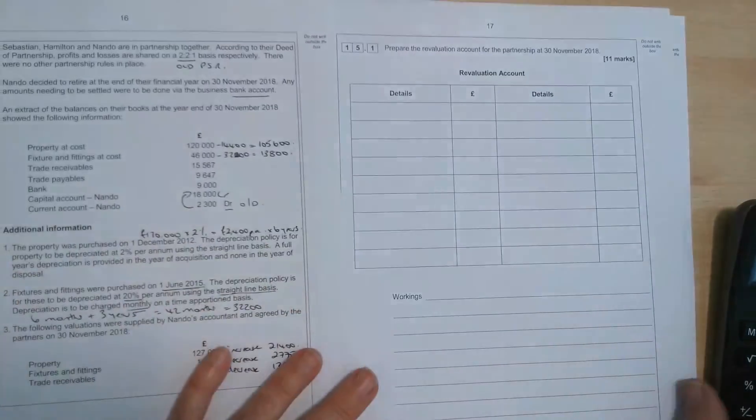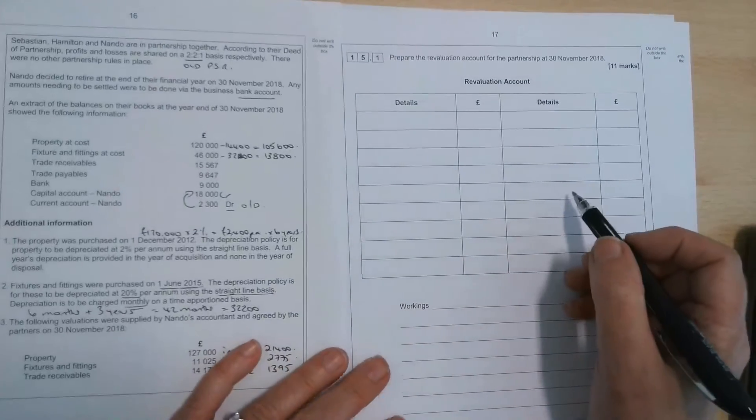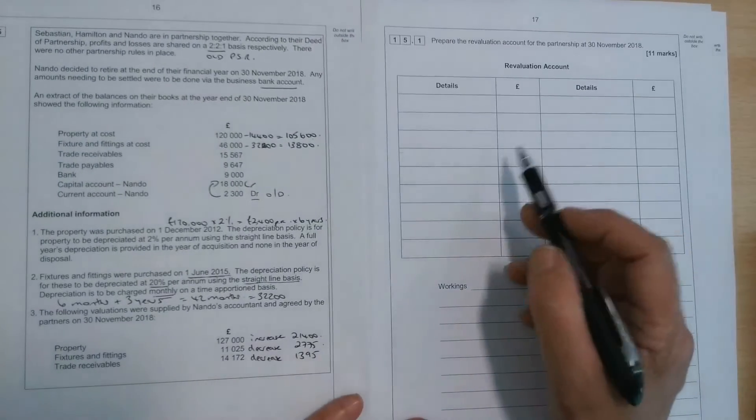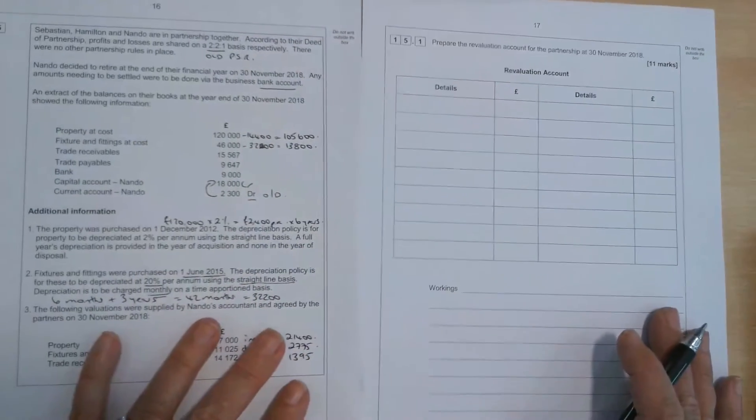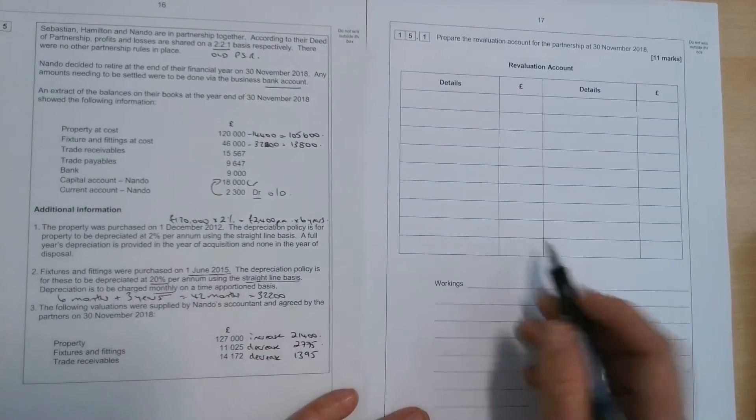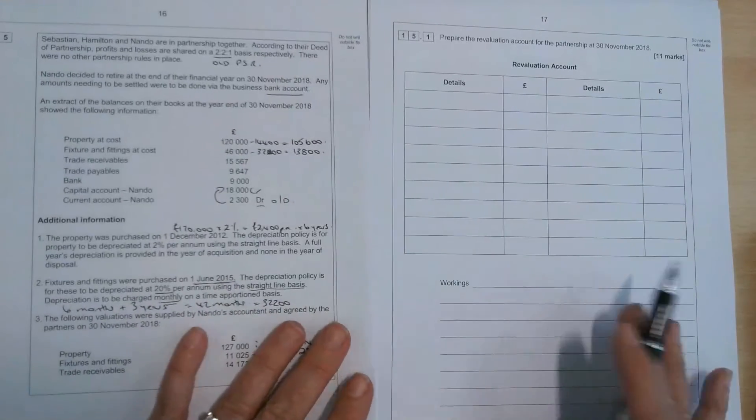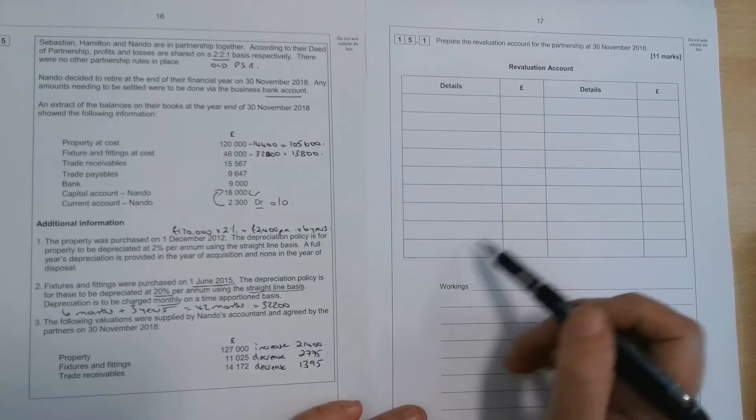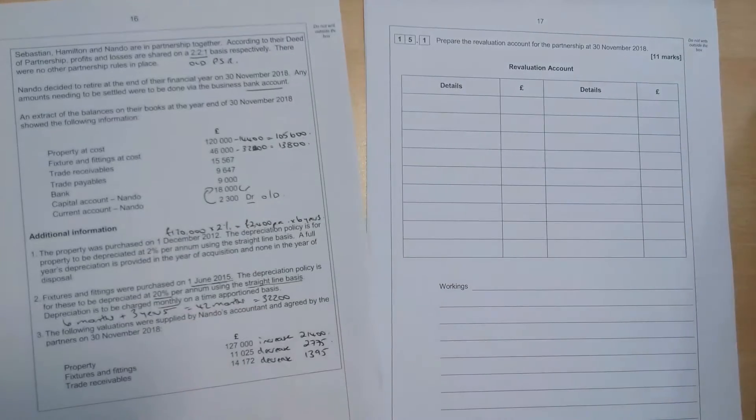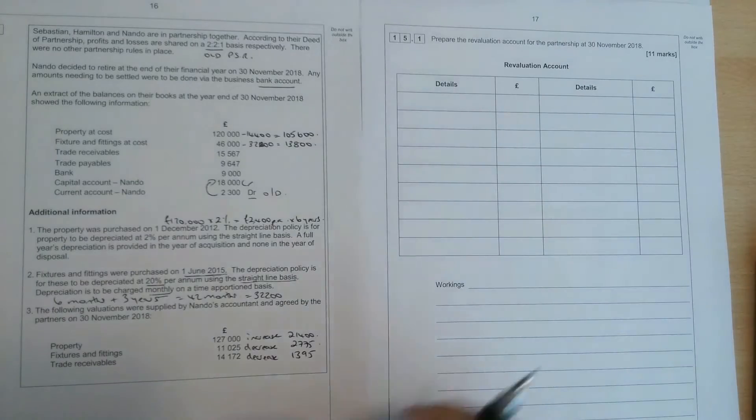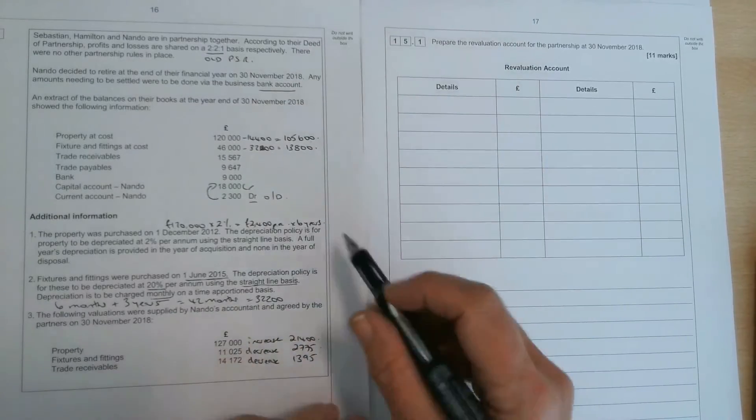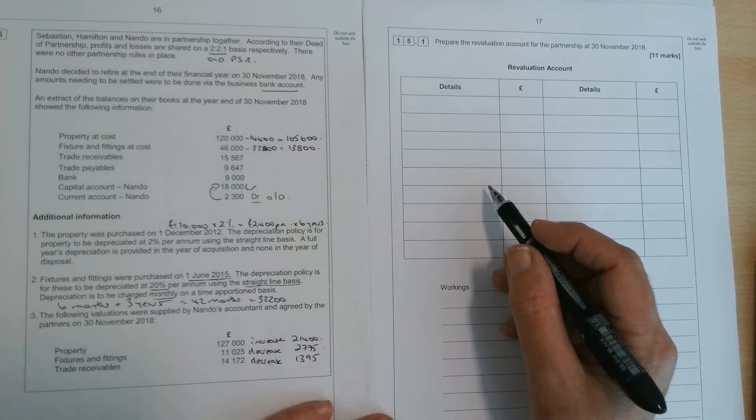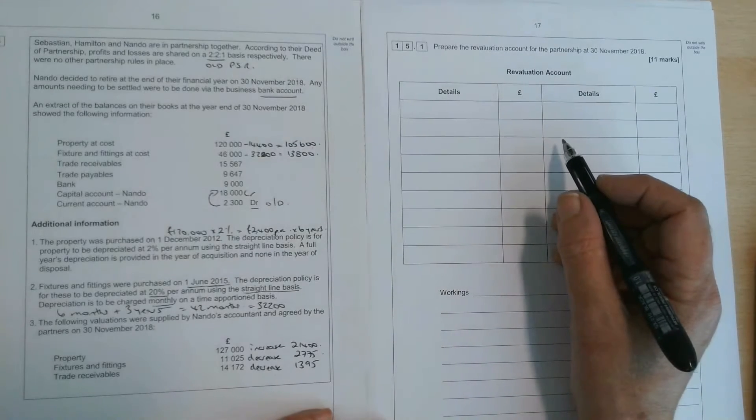So let's have a look at what we're being asked to do. The first part of this question says, prepare the revaluation. Now the revaluation account, just a reminder here, is a temporary account, a bit like the suspense account or the disposal account. And it just deals with the revaluation of any current assets and other assets, liabilities, things like inventory, trade receivables. So this would usually be done when there's a change in the partnership. So like with this one, we've got a partner retiring. We had a partner coming in or a profit sharing ratio, and we could use that as an opportunity to revalue the assets. So the revaluation account, it is a bit like the suspense account. We're just going to be dumping in here the opposite effect and working out overall whether it would be debiting or crediting the partner's capital accounts for the increase or decrease in the valuation of the assets.